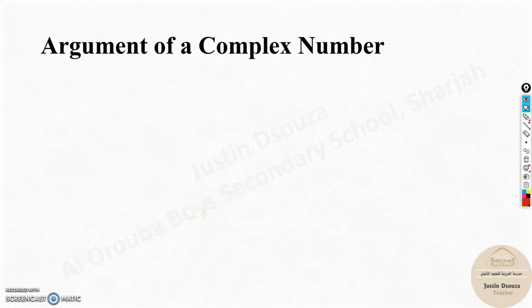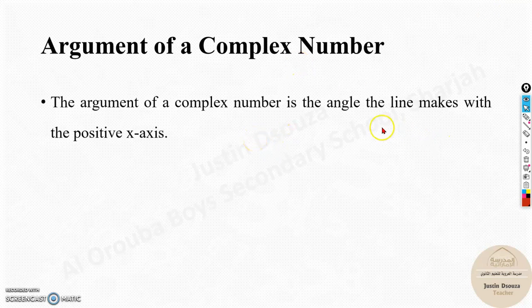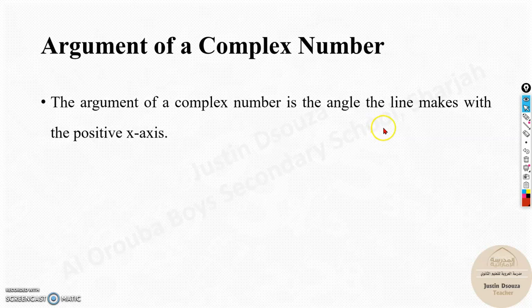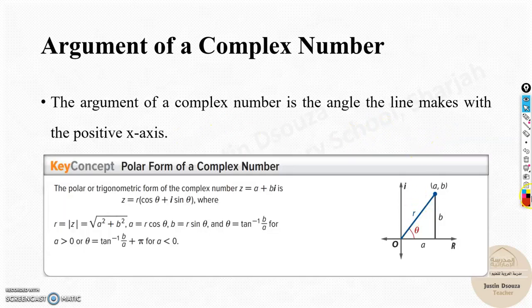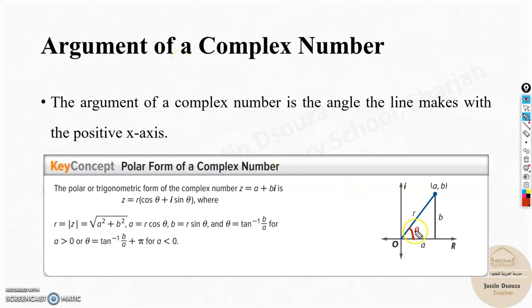We will now learn about the argument of a complex plane. Argument means the angle that is created with the positive x-axis. Now you can see over here, this is the angle theta, right? With the real axis or x-axis, that is the argument. So the argument of a complex plane is always the angle theta.